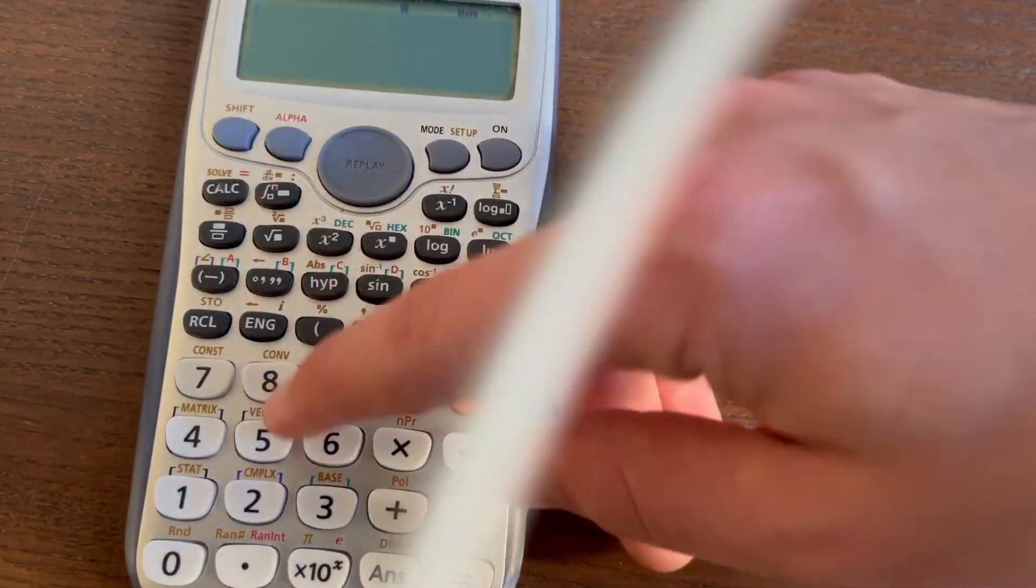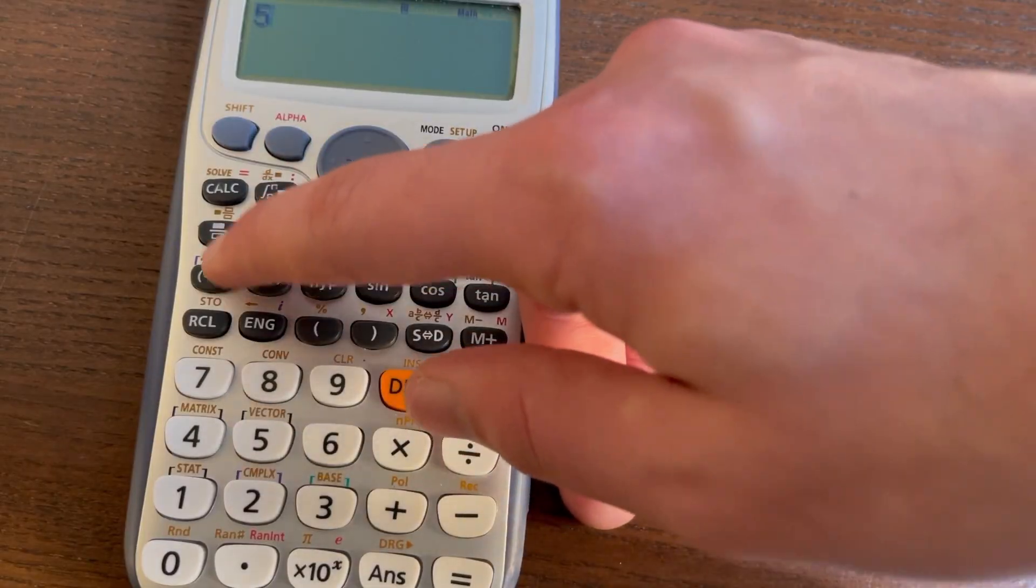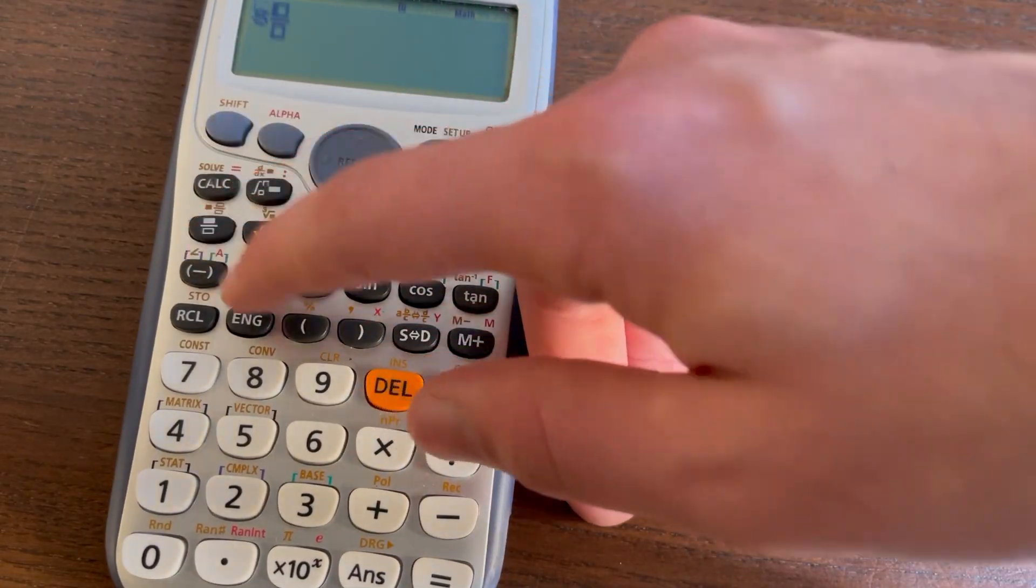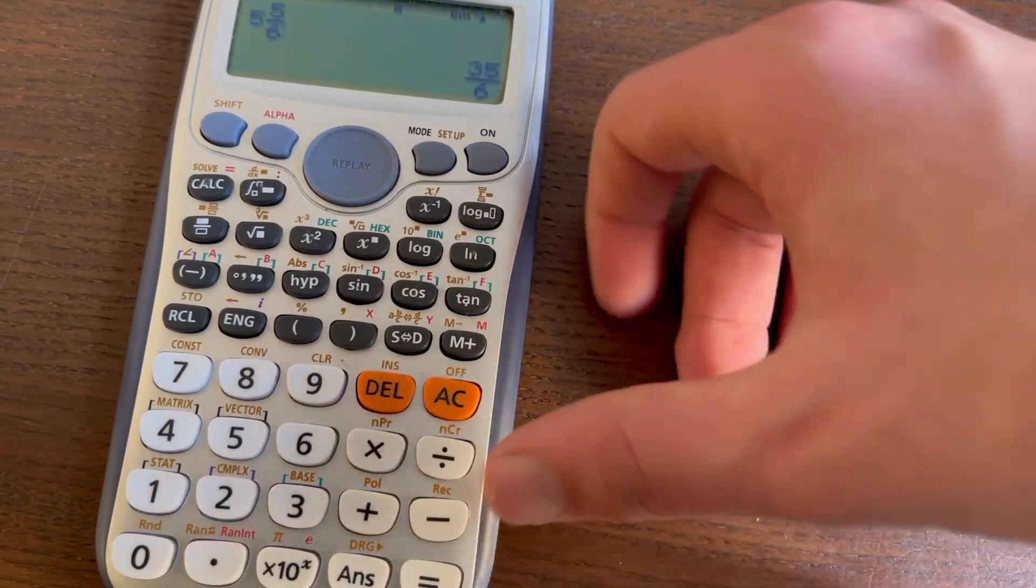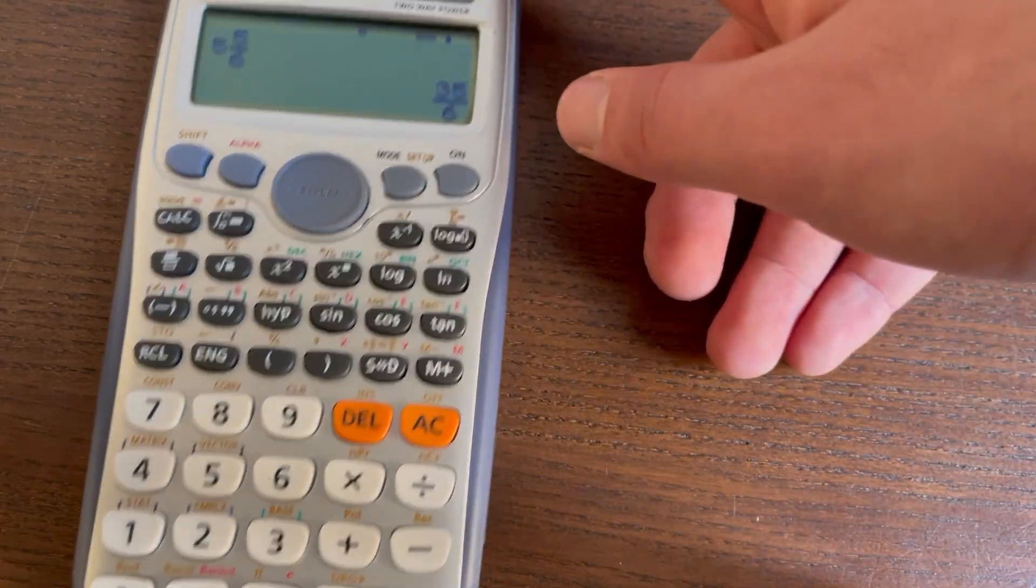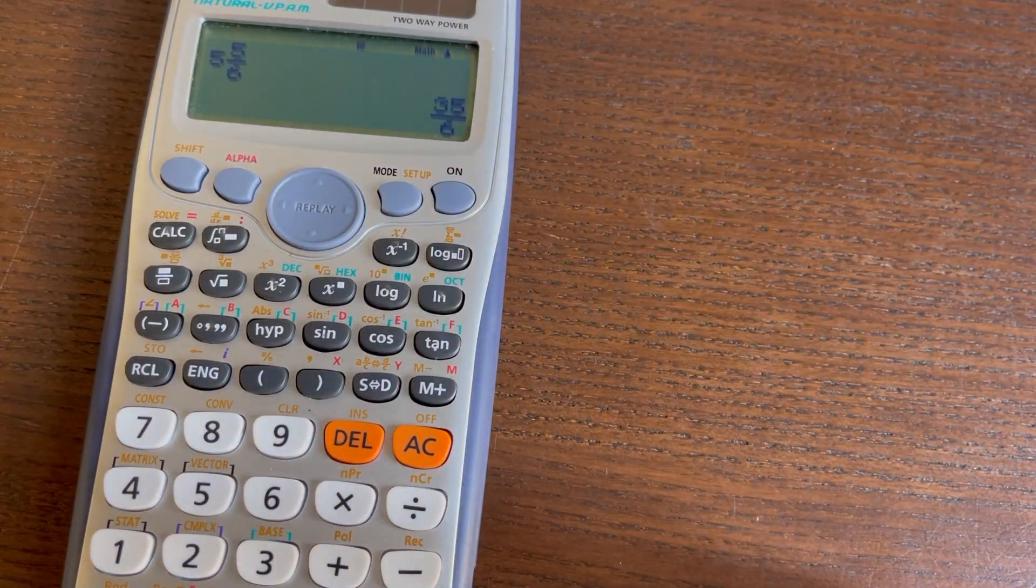And we can do it the other way around as well, so if you click 5, and then click shift, and this button over here, we can actually write in a mixed number like that, and then we can click equals, and you can see it gives us our improper fraction just like that, nice and easily.